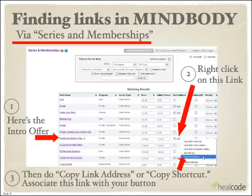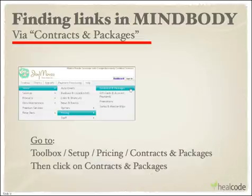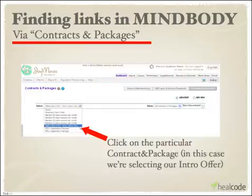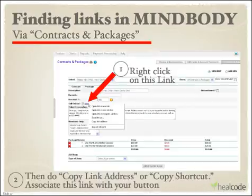If it's set up using Contracts and Packages, it's a little different — and now I'll show you that. You go to Toolbox > Setup > Pricing > Contracts and Packages, and click on Contracts and Packages. Here's the screen that comes up. You then select the particular contract or package you want to find the link for, which in this case is the Pilates Intro Offer New Clients Only. Click on that, and it brings up the details of this contract and package.